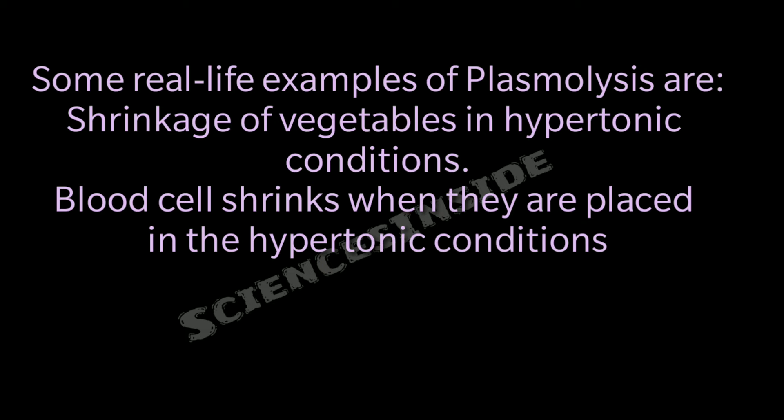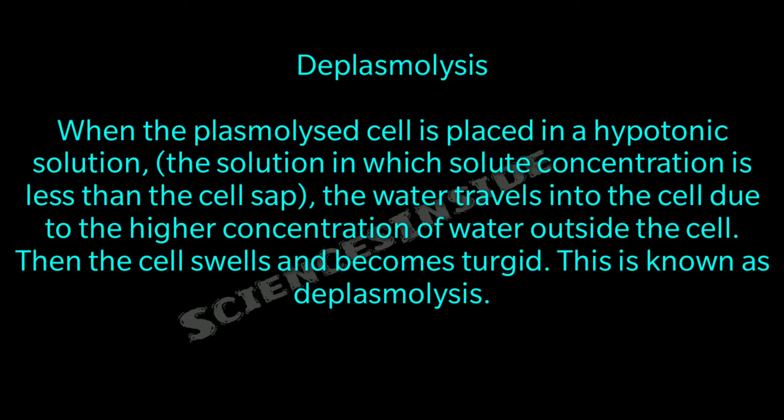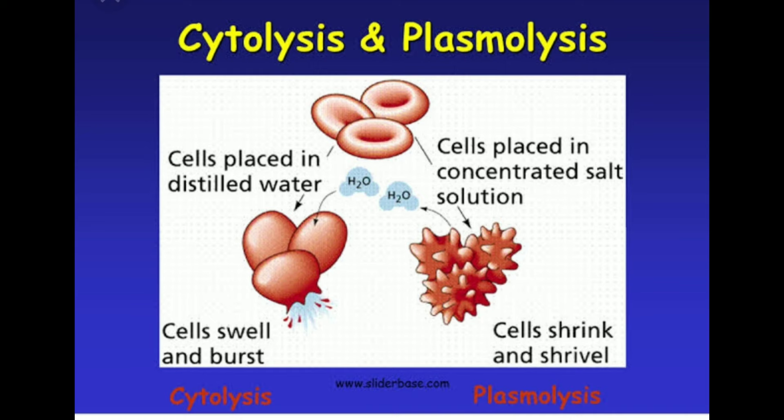When a plasmolyzed cell is placed in a hypotonic solution — where solute concentration is less than the cell sap — water travels into the cell due to the higher water concentration outside. The cell swells up and becomes turgid; this is called deplasmolysis. Cells placed in distilled water will swell up and burst, while cells placed in concentrated salt solution will shrink and shrivel.